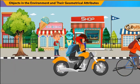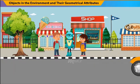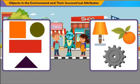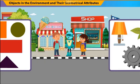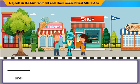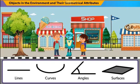Geometric shapes? Yes, any object with a fixed structure can be considered a geometric shape. These shapes are made up of lines, curves, angles, and surfaces.